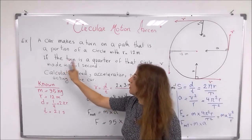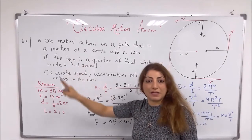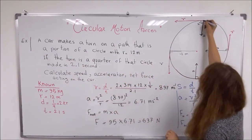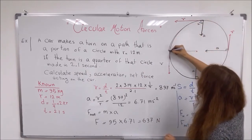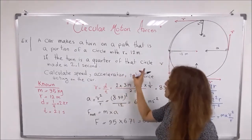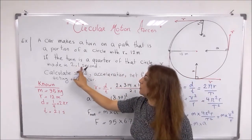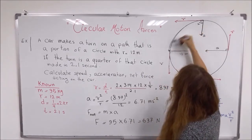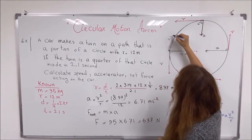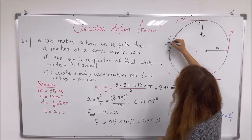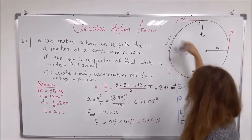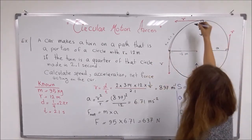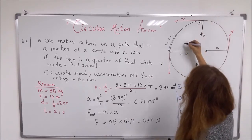The turn that the car is moving on is a quarter of the circle — from here to here only, a quarter of the circle — and this quarter is completed in 2.1 seconds. The time taken to move a quarter of the circle is 2.1 seconds.